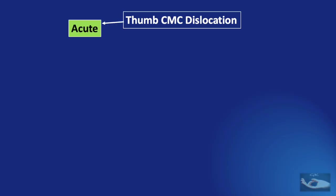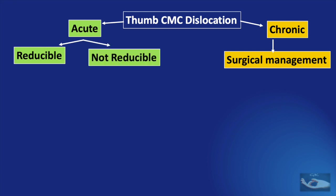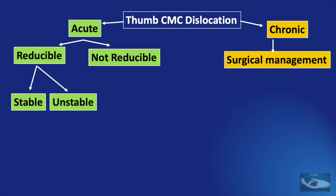In summary, dislocations can be acute or chronic; management of chronic dislocation is surgical. Acute dislocations may be reducible or not reducible. If not reducible, surgical management is indicated. If reducible, we need to check whether the joint is stable or unstable after reduction.